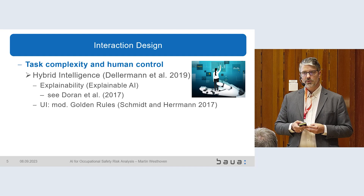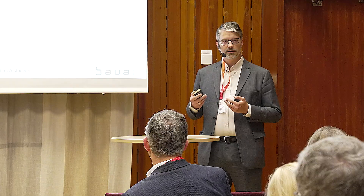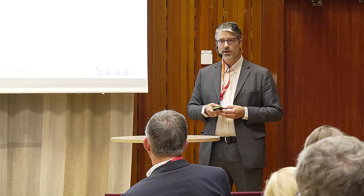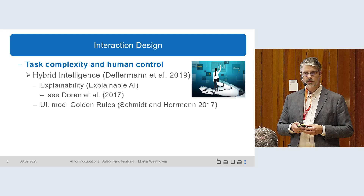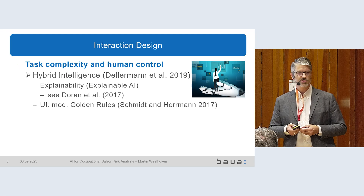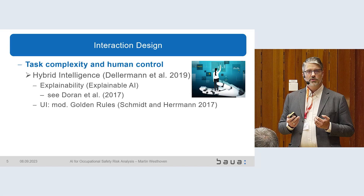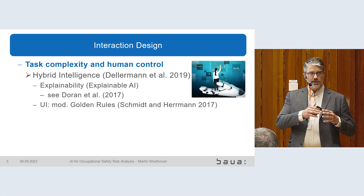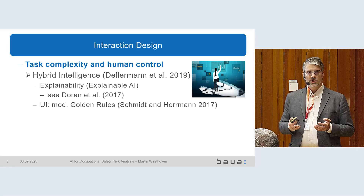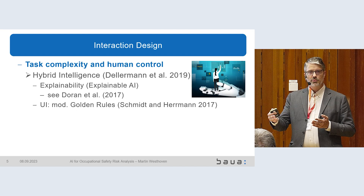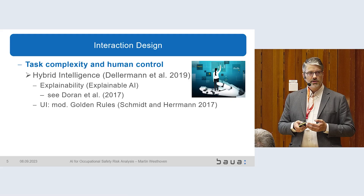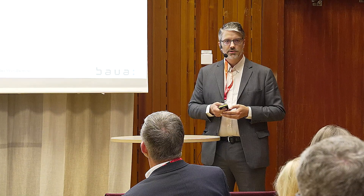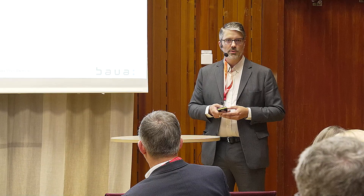The next point is how we can tackle task complexity and the necessity of having the human in control. One approach is hybrid intelligence, which is the goal of creating AI that performs together with the human, where they learn from each other. It's not only the human providing training data to the system, but also the system giving back something to keep up competencies and probably even gain new competencies.